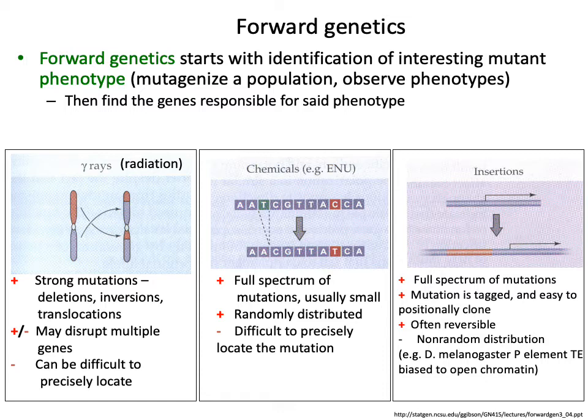There's a broad spectrum of different approaches you can use to mutagenize an individual, ranging from very blunt approaches using gamma rays to very targeted approaches using transposable elements. On the blunt end of the spectrum, when you use things like gamma rays to induce mutations, you tend to get very large scale mutations — big deletions, inversions, or translocations.